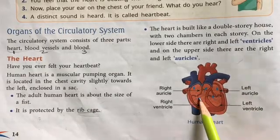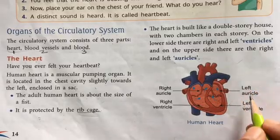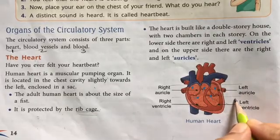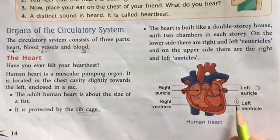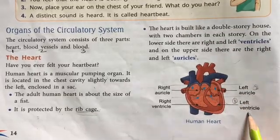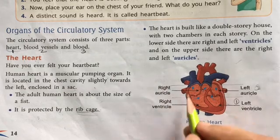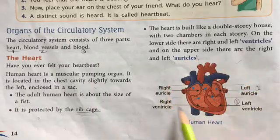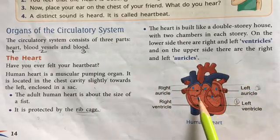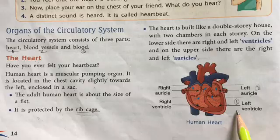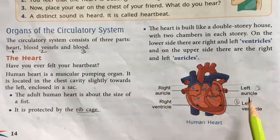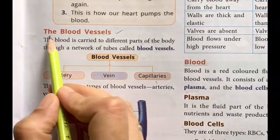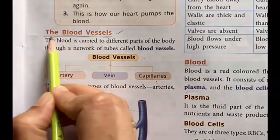The heart is like a two-story building. On the second floor you have the left ventricle and right ventricle, and on the first floor you have the right auricle and left auricle. So our heart has four chambers: left and right ventricles and left and right auricles.